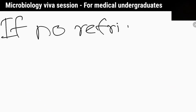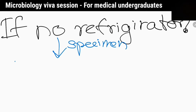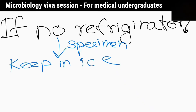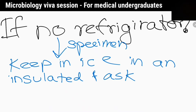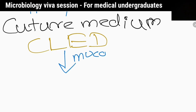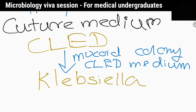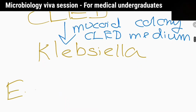What if there is no refrigerator or your refrigerator has broken? Then keep the specimen on ice in an insulated flask and transport it. Tell me a culture medium you would use. CLED medium. Tell me an organism that shows mucoid colonies in that medium. Klebsiella.